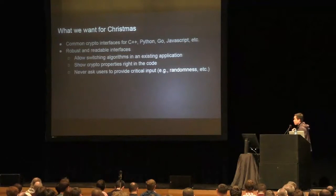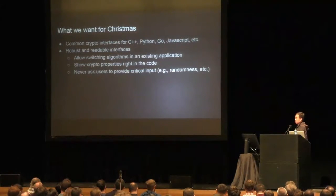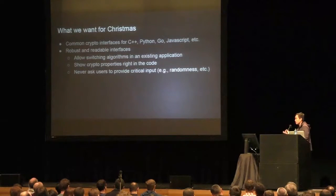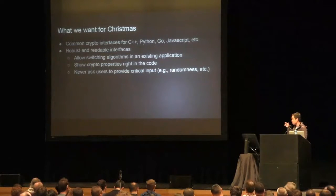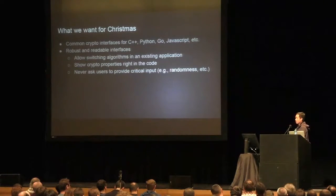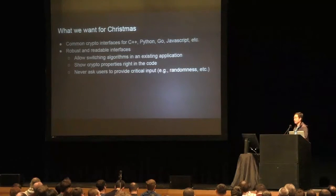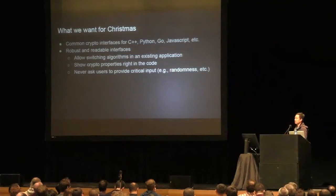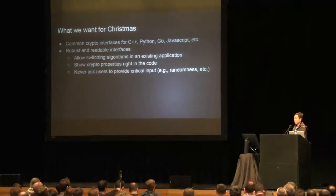Another property we want to see in crypto libraries is that it should be easy to look at the code and understand right away the crypto properties guaranteed by the library. For example, if you are using authenticated encryption, it should be easy to understand that without having to navigate the whole library structure and go down the abstraction layers. Another thing we would like to see is the crypto community develop common crypto interfaces for C++, Python, Go, or JavaScript. We have something for Java, which is the Java Cryptography Architecture, but we don't have anything for these languages, and it's very hard for us to write tests without a common crypto interface.